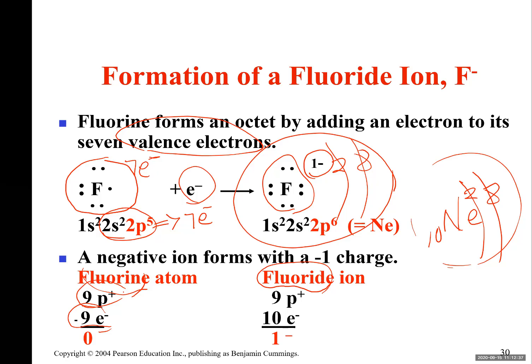After it gains one electron, number of protons, of course, are not changing because we are not talking about nuclear reactions. Nucleus remain the same. Protons are the same. One electron added. So now in here, we have got 10 electrons.